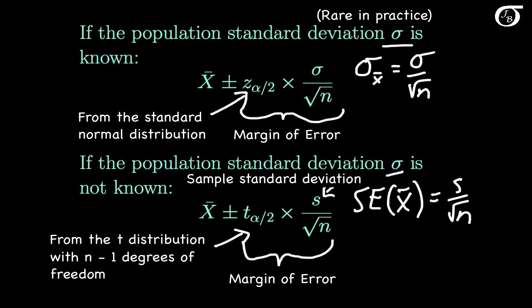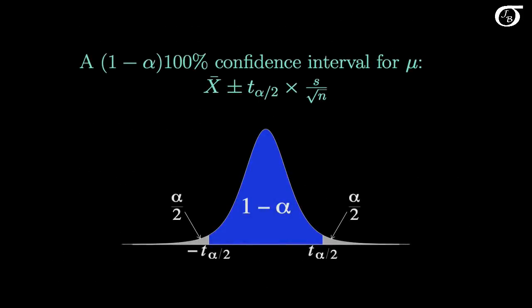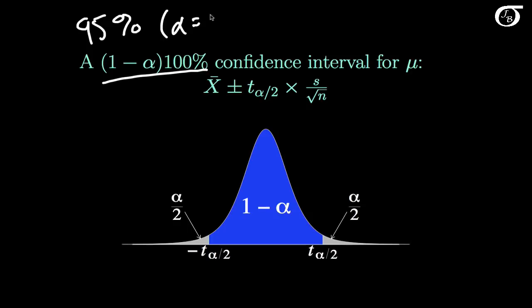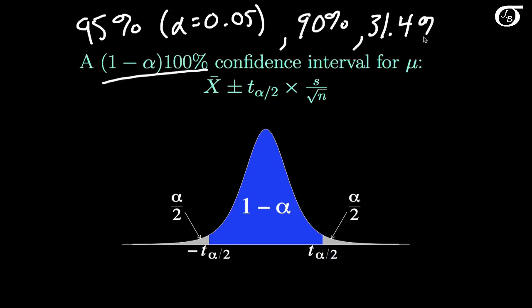Let's take a look at that in a little more detail. If we are sampling from a normally distributed population where we do not know the value of sigma, then this is the appropriate formula for the confidence interval. 1 minus alpha times 100% is our confidence level, and the most common choice is 95%, which would mean that the alpha level is 0.05. But we can choose other confidence levels if we so desire, like 90% or anything we want.